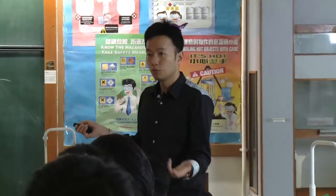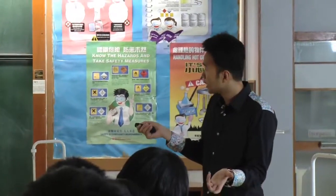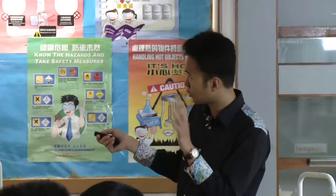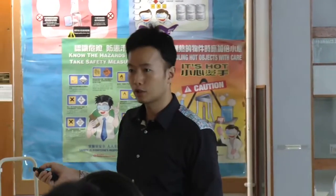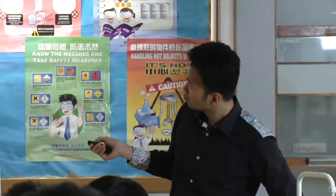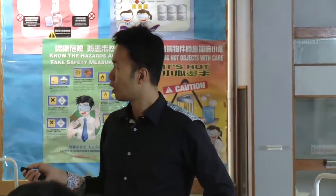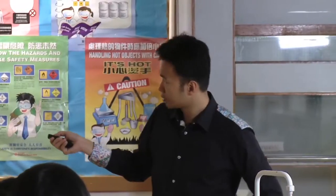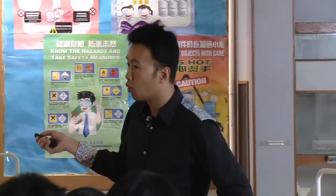Let's zoom in one more factor of 10 — that's one centimeter. Now we can see the wings and other structures, maybe cell structure. Let's zoom in closer to one millimeter. Now we can see the plant cell. At 100 microns — 10 to the minus 6 — we can see the plant structure more clearly, the cell wall and all the other details.